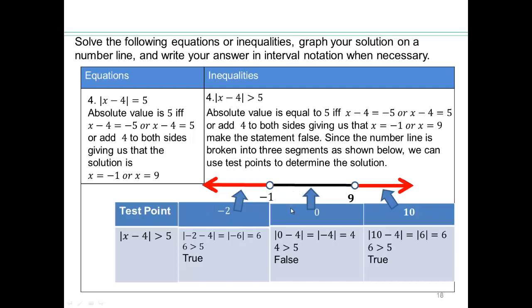No matter what number you pick, if you subtract 4 from any number between negative 1 and 9, you are always going to get a number smaller than 5. If you pick a number bigger than 9 and you subtract 4 from it, you'll always get a number bigger than 5. And its absolute value will also be bigger than 5. So, there is more complicated reasons for why you should just take one test point, but it's beyond the scope of this class.